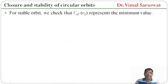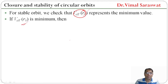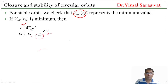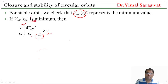For a stable orbit, we check that V_effective represents the minimum value. If V_effective is minimum, then ∂/∂r of (∂V_effective/∂r) at r = r₀ is greater than zero. The second differential being positive confirms a minimum; if less than zero, it is a maximum. So for V_effective to be minimum, the second differential must be positive.